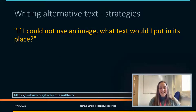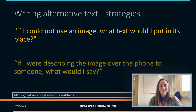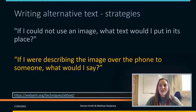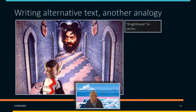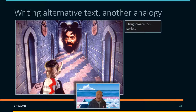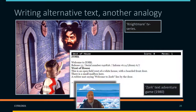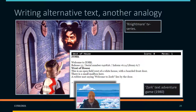There are various strategies. One thing you might ask yourself is: if you can't use an image, what text would you put in its place? You could think of it as describing the image over the phone to somebody — what would you say? Another analogy is the TV show Nightmare, where contestants described to the helmeted person what was going on in the room. Or maybe you played a text adventure where descriptions gave you enough information to know where you were in the game and play it effectively.